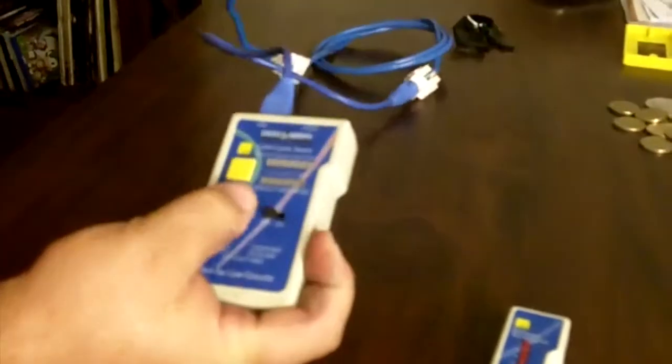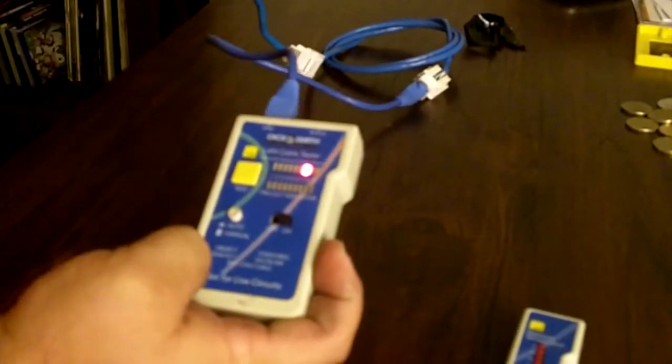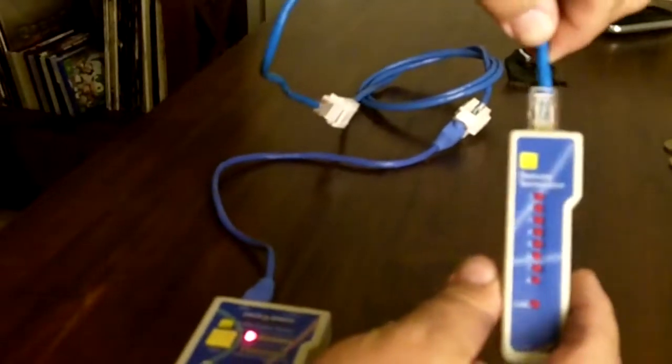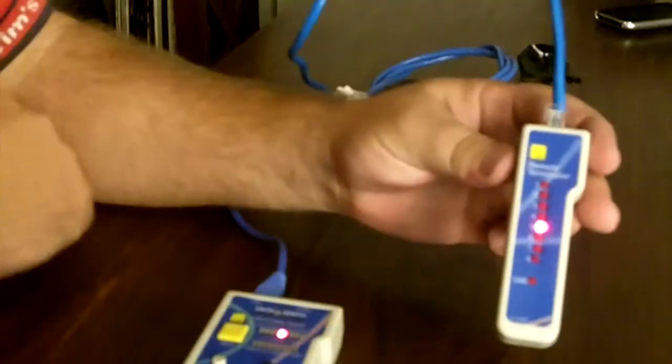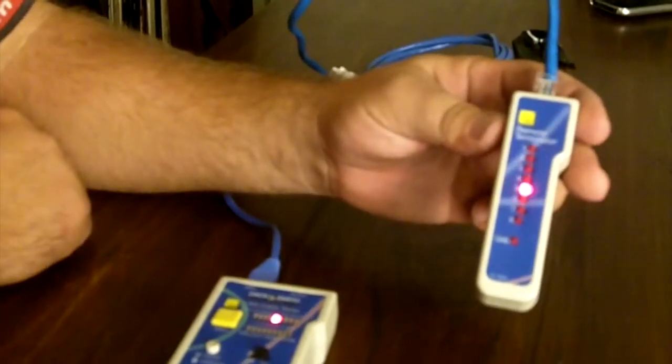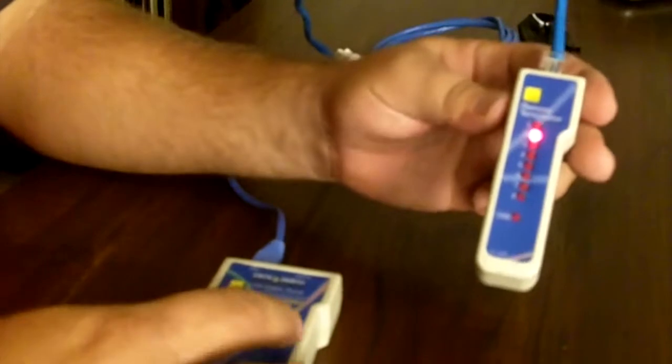You switch the cable tester on, just make sure that's working. Go through to the other room, patch lead into the wall plate, plug it in. There we go.